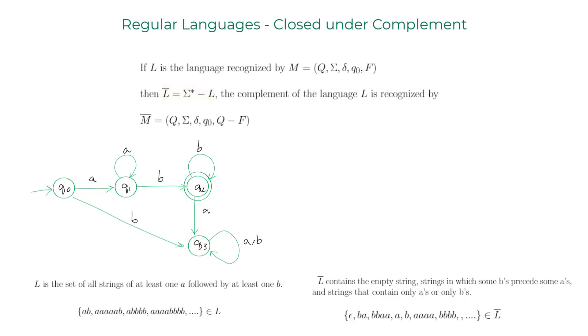The five-tuple description of M-bar is Q, Sigma, delta, Q0. Everything is the same as M except for the final accepting states, which is Q minus F. In this example, the set Q minus F contains Q0, Q1, and Q3. Drawing the DFA for this five-tuple, we have Q0, Q1, and Q3 marked as accept states, and Q2 is not an accept state.